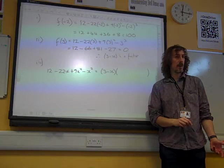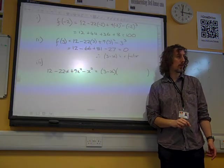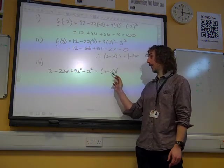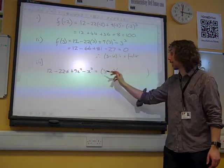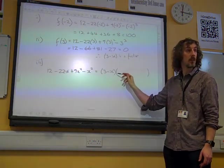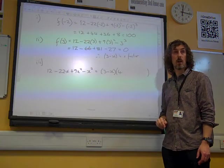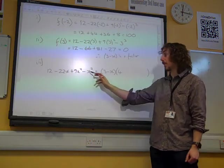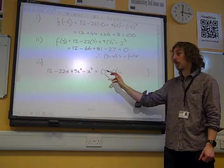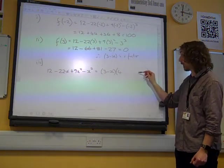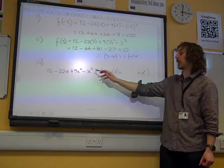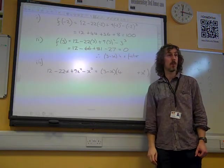But we could still think it through. To get this first term, we start with the 12 here. So this must be 3 times whatever number is here. So that must be 4. At the other end of our bracket, we need to have a minus x cubed. We've got a minus x there. So this must be a plus x squared to give us minus x cubed.